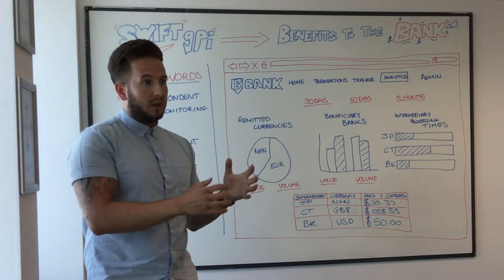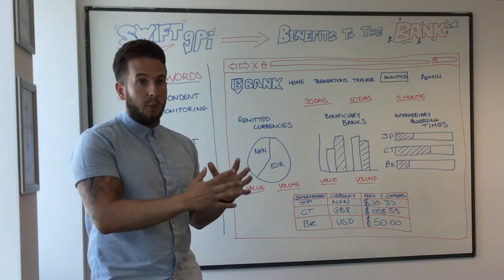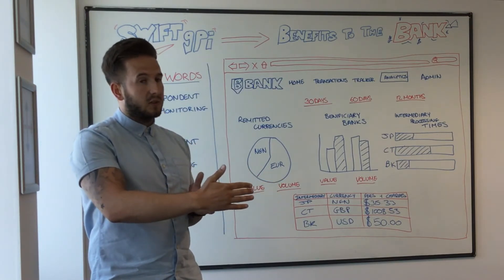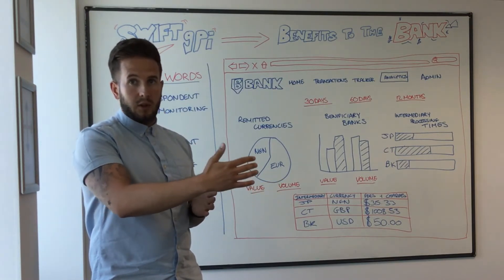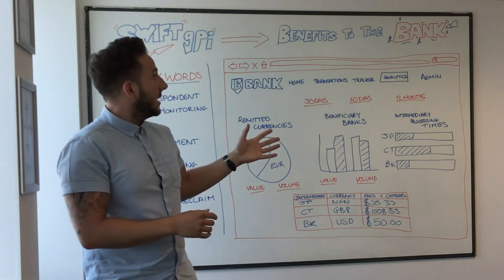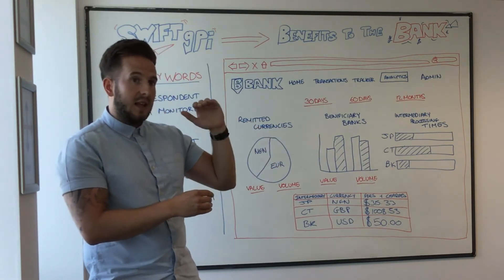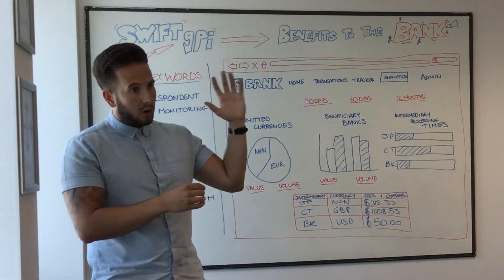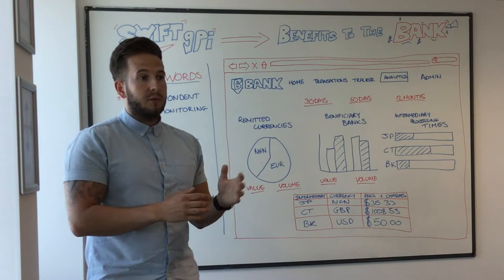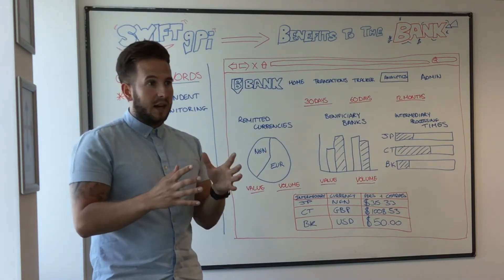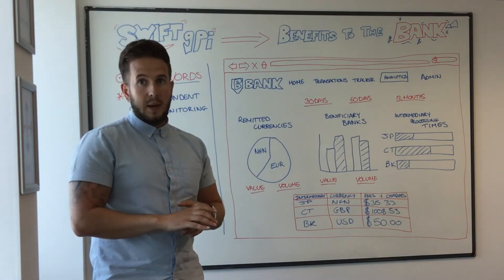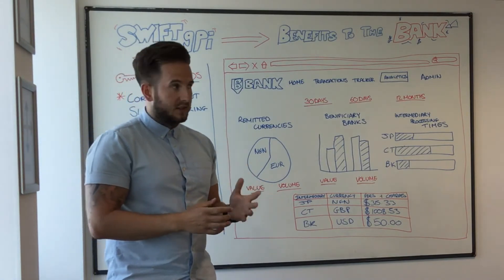What this will do is give banks visibility into further processing of the payment that they haven't had before. When the payment leaves the bank's operating platform, they have very little visibility other than what the correspondent is going to show them. Now with GPI, they're going to be able to see that payment move all the way through the infrastructure, straight through to the beneficiary's account — giving them that extra level of detail of where the payment is once it's left their system.